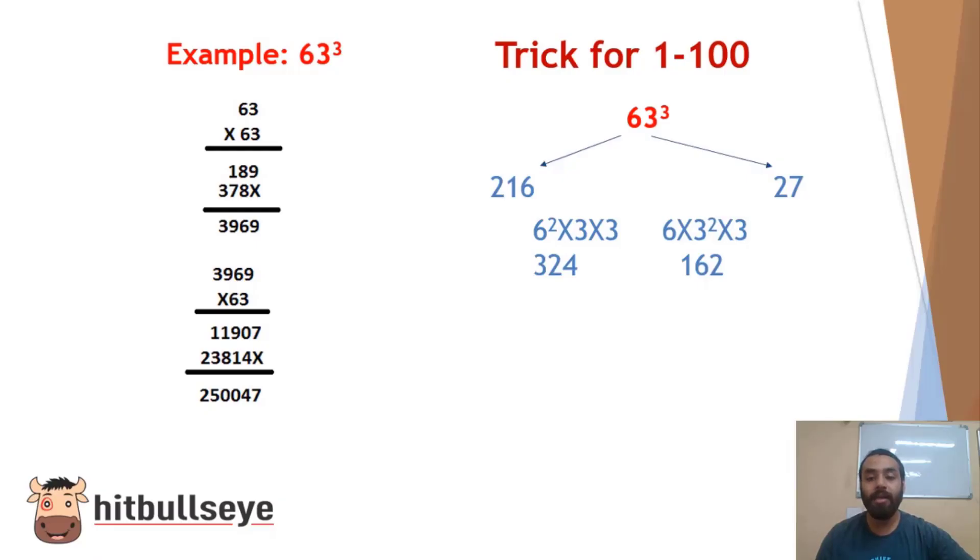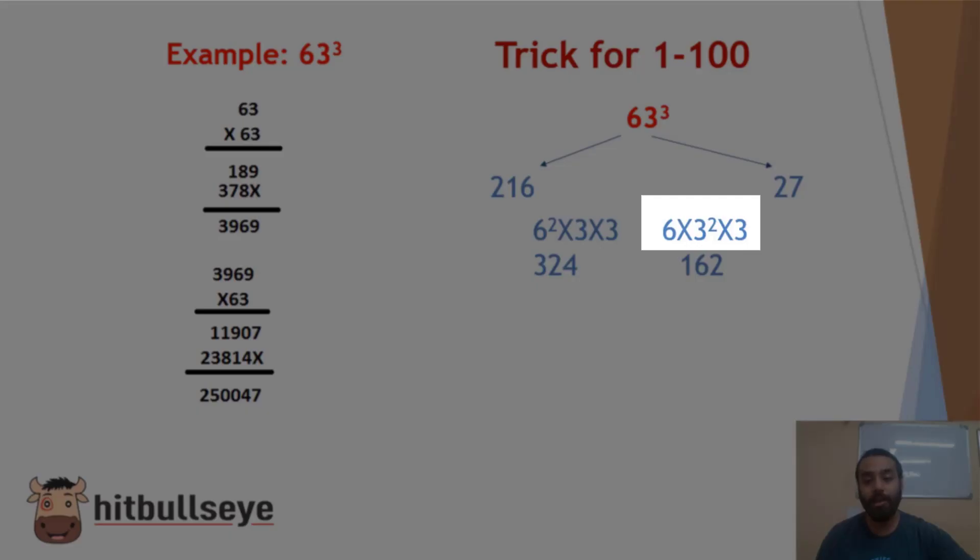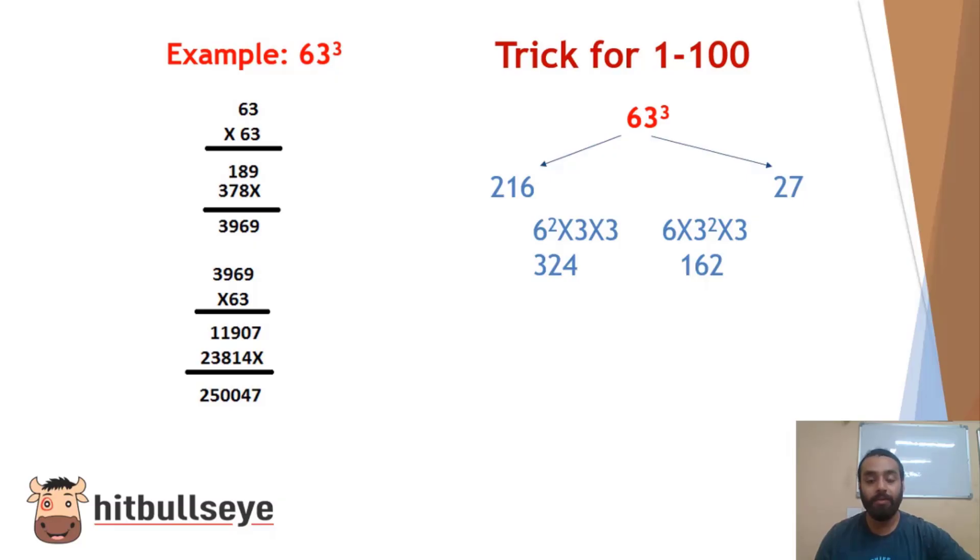Again in the next part, we will see that 6 is taken as the single unit and after that the second number of the expression that is a square number. So 6 into 3 squared into 3. This will give us 324 and 162.